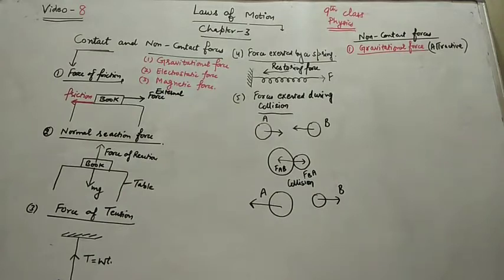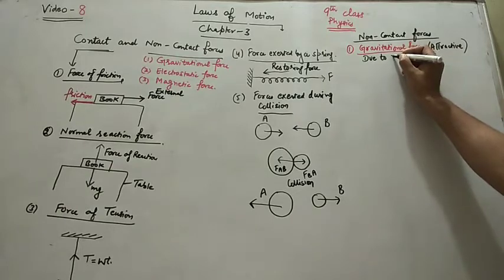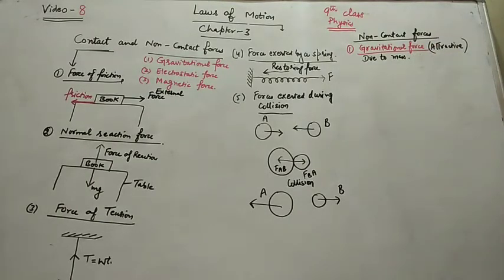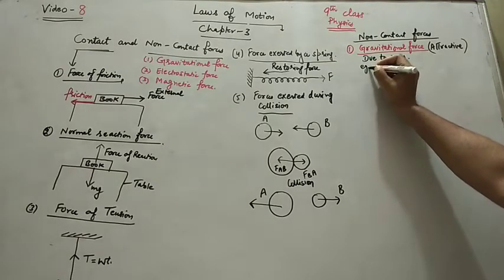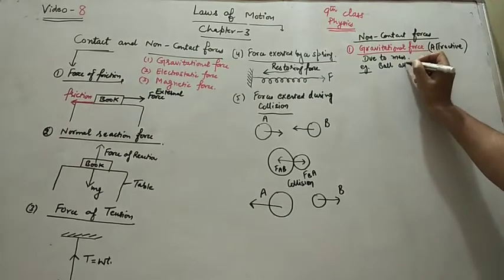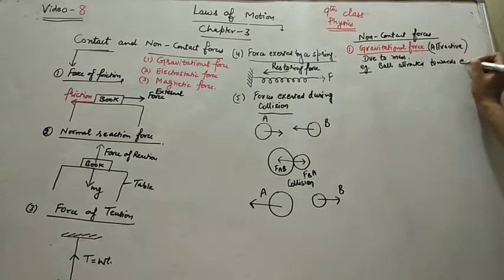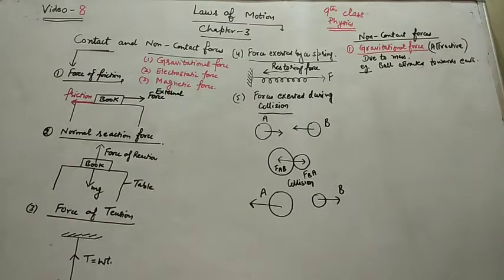In the universe, each particle attracts the other particle due to its mass. This force is exerted due to mass. More will be the massive body, more will be the gravitational force of that body. For example, a ball is attracted towards earth when it is thrown in vertically upward direction. A coin also falls down when it is released at a height.